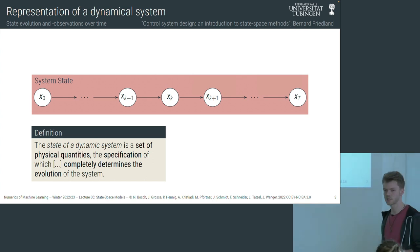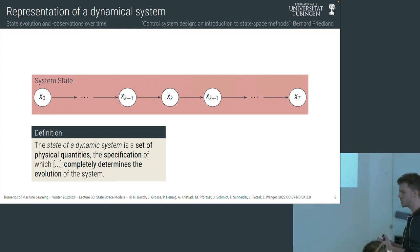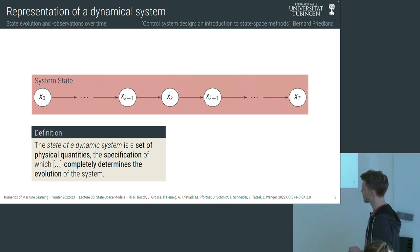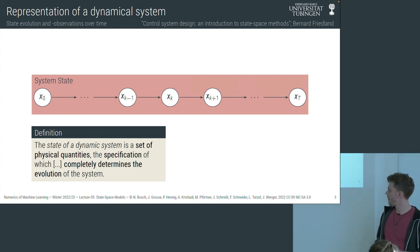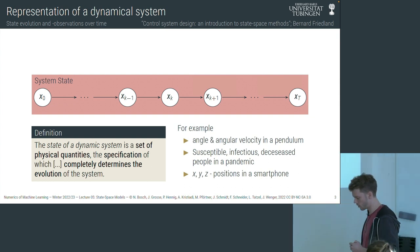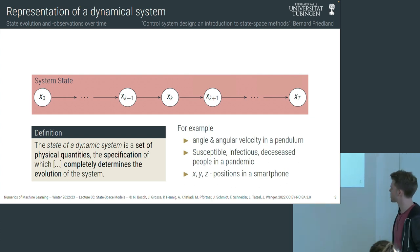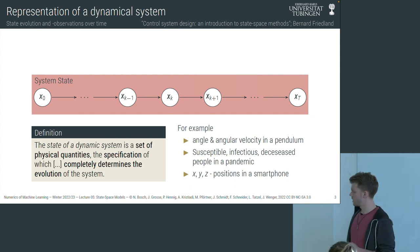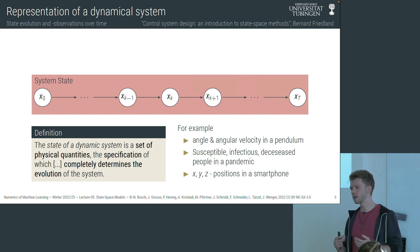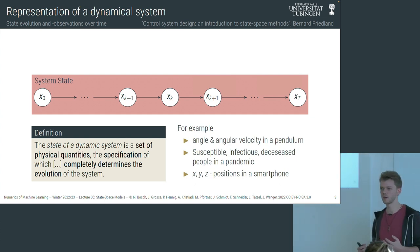A state is not just one quantity but a set of physical quantities that are tracked together and expected to interact in a potentially very complicated way. For a pendulum, the state is the angle and angular velocity at every time step. In the COVID example, you track susceptible, infectious, and deceased people in a population, but also potentially the contact rate or recovery rate — all potential components of your state.